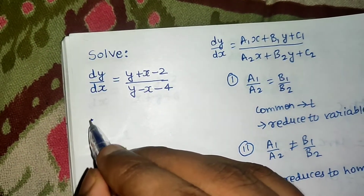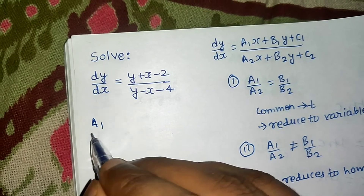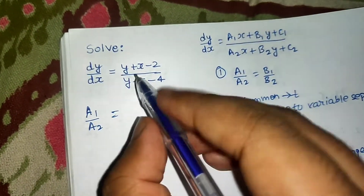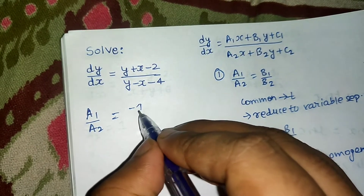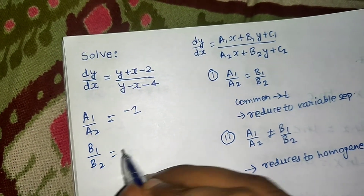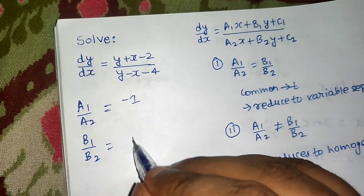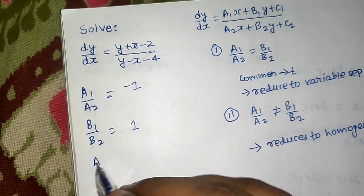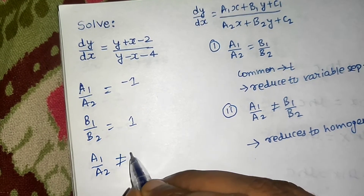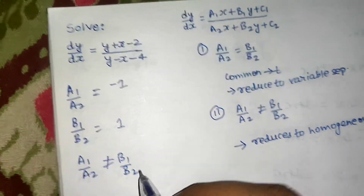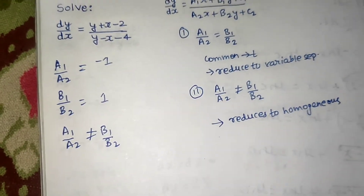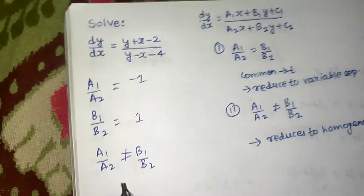Let's check which case this question belongs to. a1/a2 is the ratio of coefficients of x, which is 1/(−1) = −1. b1/b2 is the ratio of coefficients of y, which comes out to be 1. Clearly a1/a2 ≠ b1/b2, so we move to category 2.